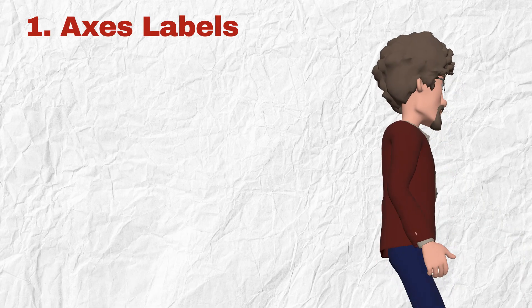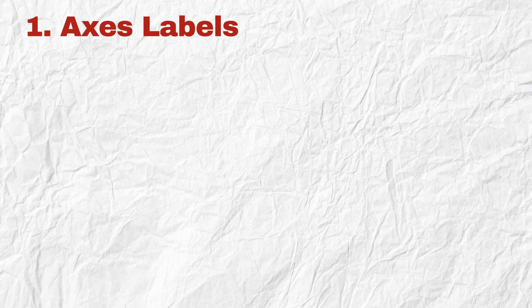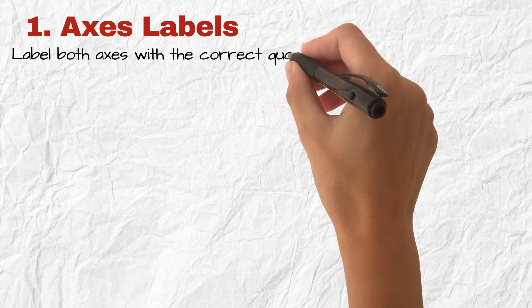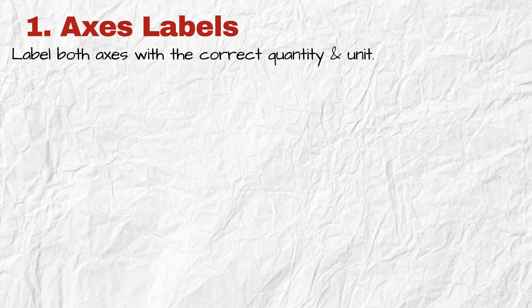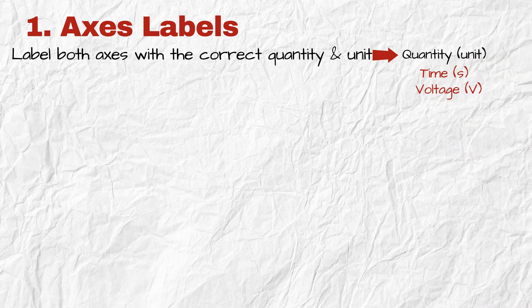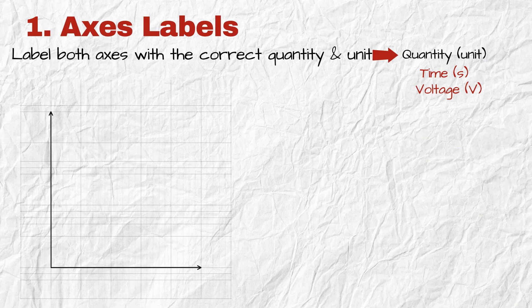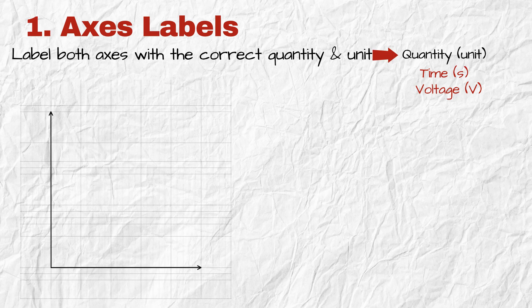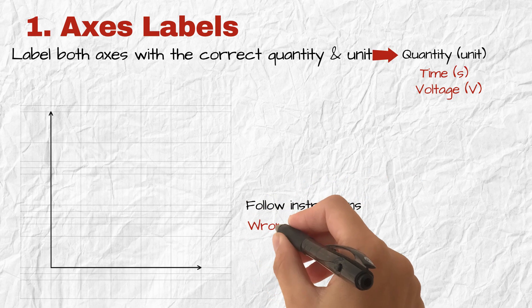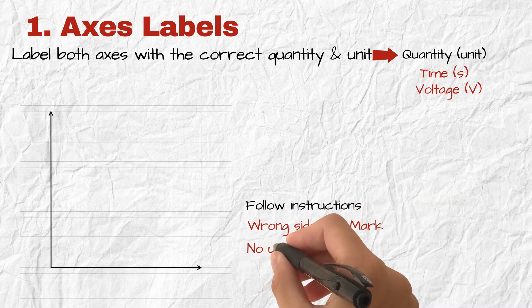Step one, axes labels. Here, what's expected from you is label both axes with the correct quantity and unit in this format: quantity, then unit in brackets. Example: time in seconds, voltage in volts. Now here's the easy point. You don't need to think which variable goes on the x-axis and which on the y-axis. The question will say it. Just follow the instruction. If you label the wrong side, no mark. If you write no unit, no mark.